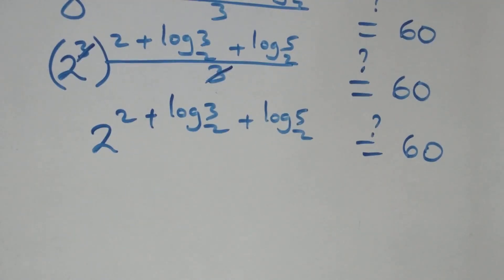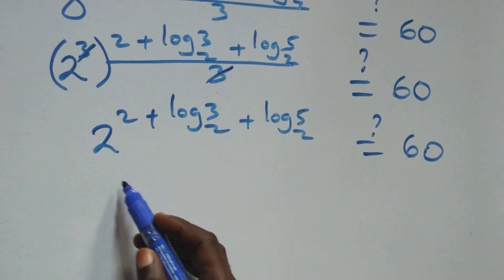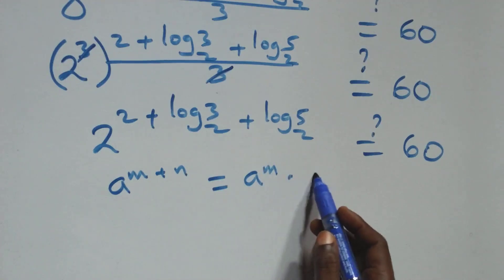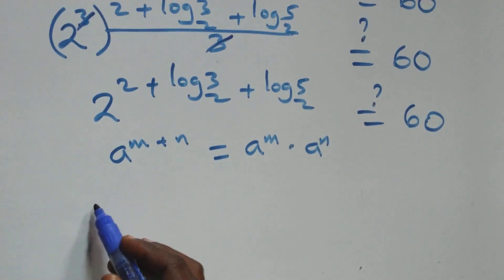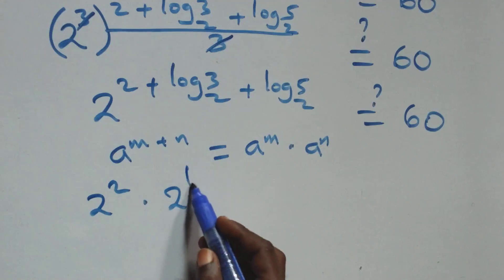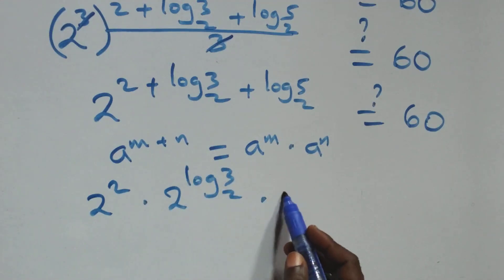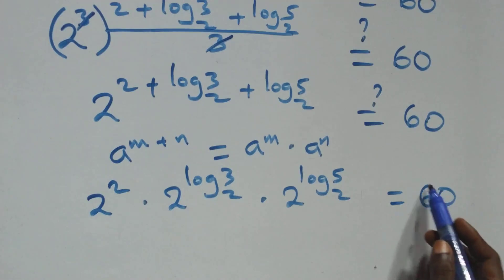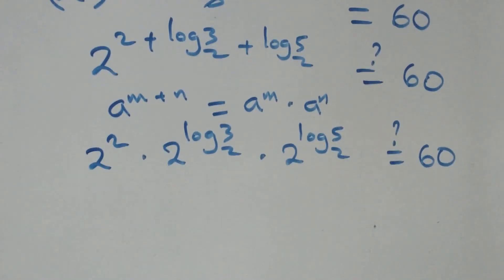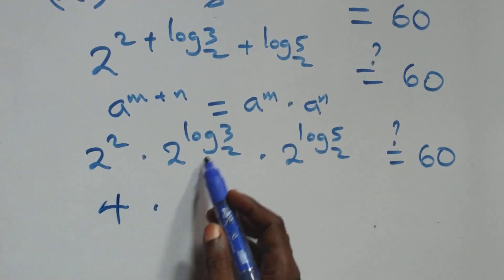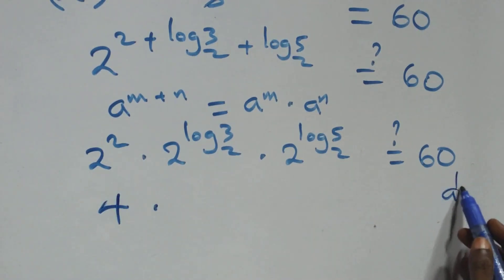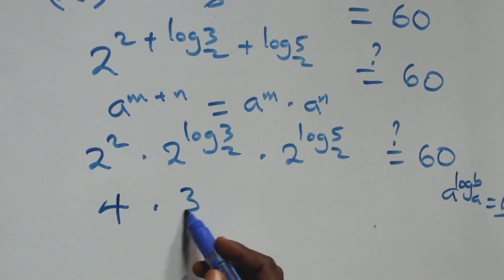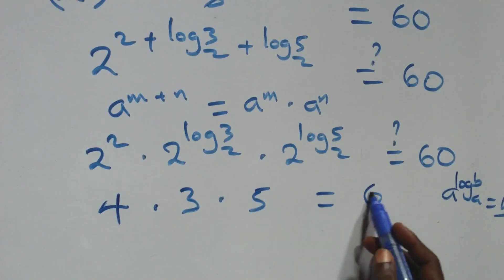Then here we apply the law of indices. This power multiplies and we get 8 raised to power 2 plus log 3 base 2 plus log 5 base 2, all over 3. Then here, 2 raised to power 2 is 4, and then this follows: when we have a raised to power log b to base a, which is equal to b. That is, this is the same thing as 3, times here we have 5, this is equal to 60 on this side.